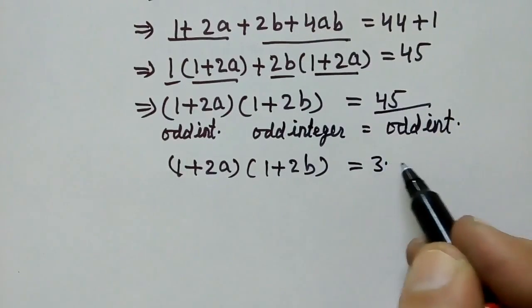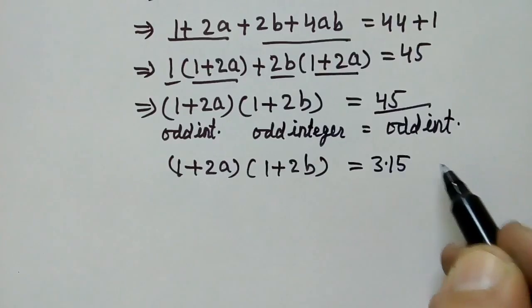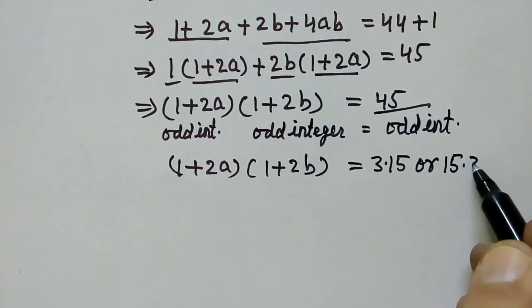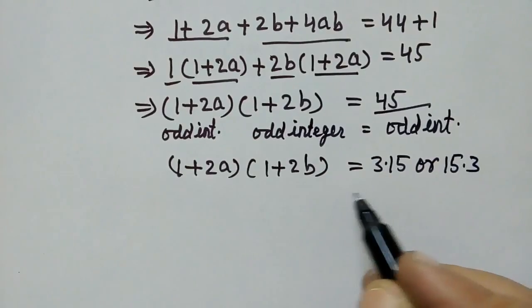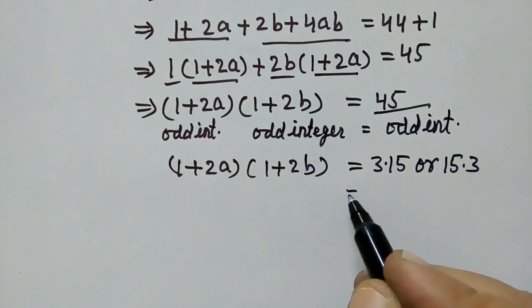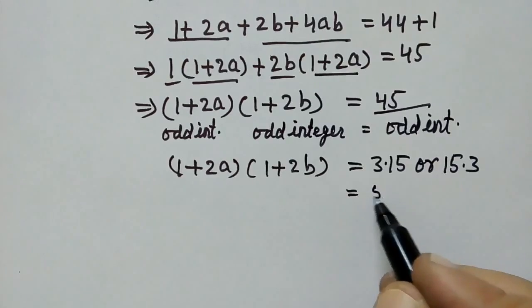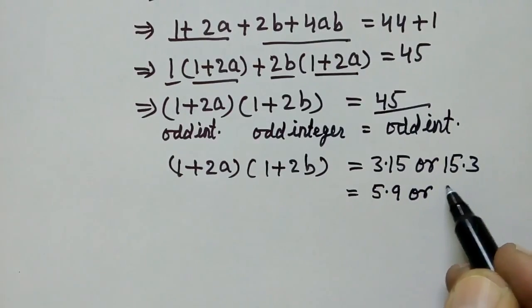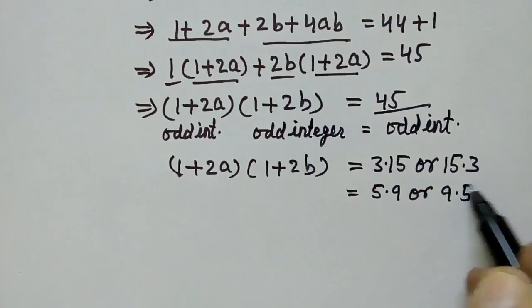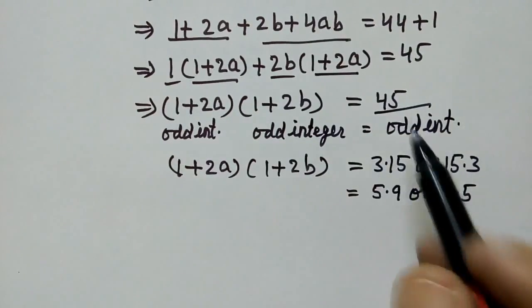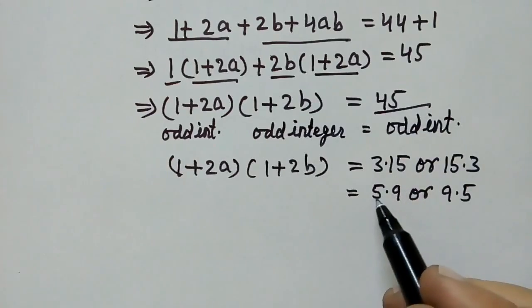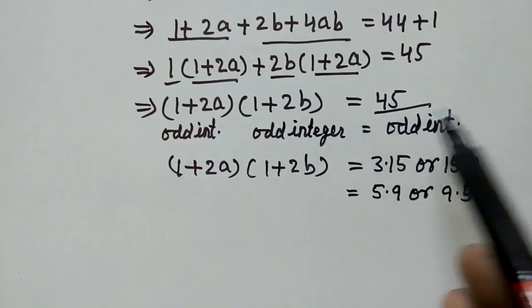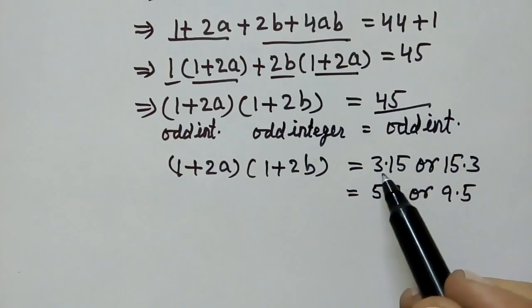We can factor 45 as: 3 times 15, or 15 times 3, or 5 times 9, or 9 times 5. So we can write 45 in these ways as products of odd integers.